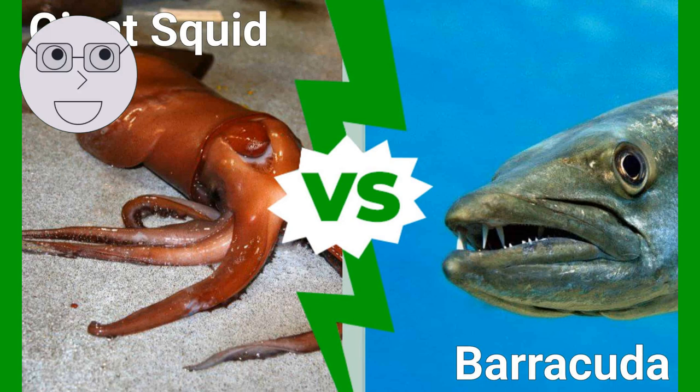Fish have a simple digestive system, with the mouth, esophagus, stomach, and intestines. Some species have specialized teeth or jaws for crushing shells or tearing flesh. Others have a unique feeding mechanism, such as the suction feeding of some species of catfish.